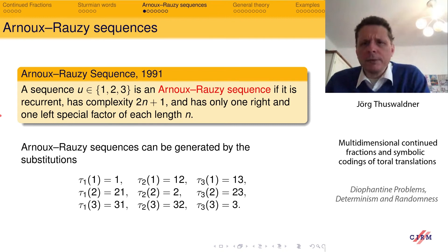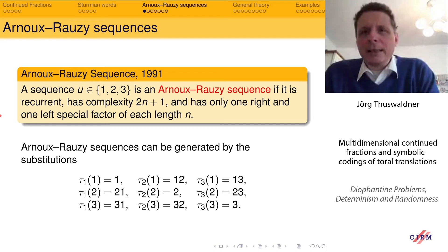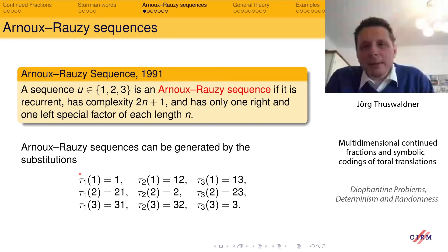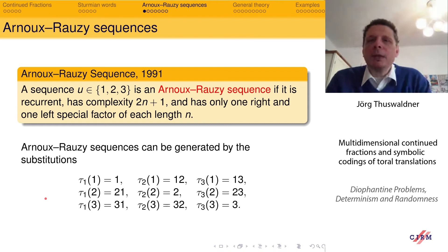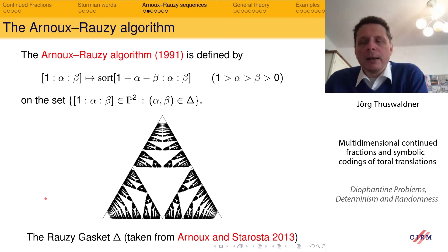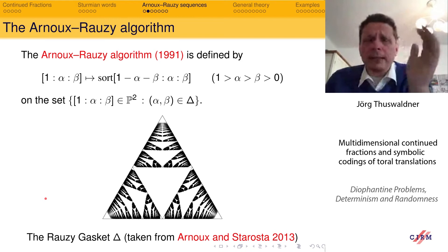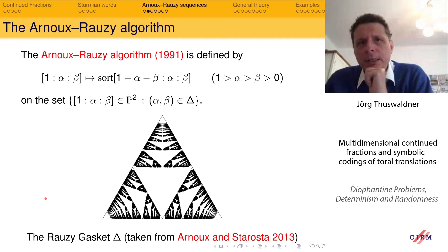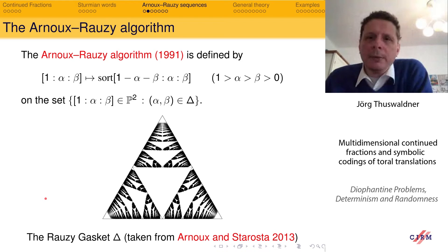Like Sturmian words, Arnoux-Rauzy words can also be created in this S-adic way. The substitutions we had before were just two substitutions; now for three letters, Arnoux-Rauzy sequences extend this very naturally. Arnoux-Rauzy sequences are defined as S-adic sequences — by sequences of substitutions. If you forget the combinatorics and look at the incidence matrices of these substitutions, you produce sequences of matrices, which can be related to a continued fraction algorithm now called the Arnoux-Rauzy algorithm.